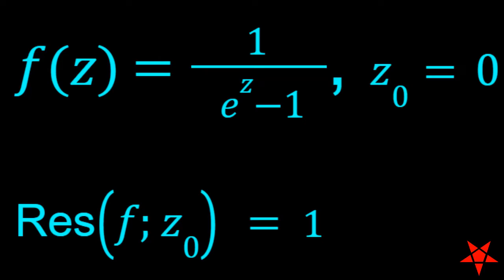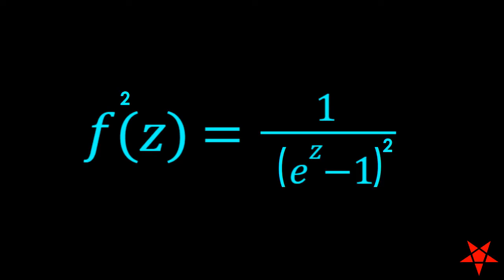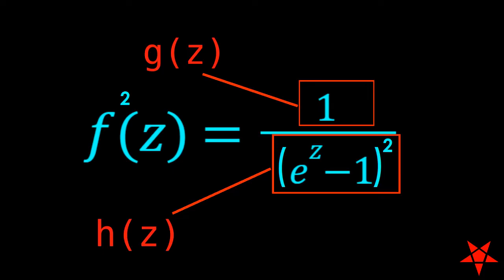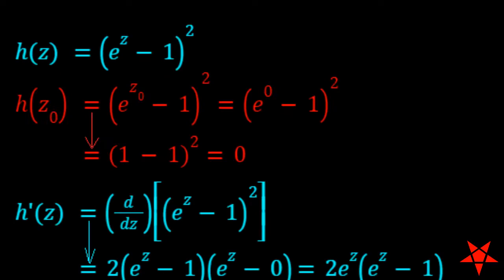So we'll move on to the square of f of z. We will begin by separating the square of f of z into two functions, g of z for the numerator and h of z for the denominator. We see that g of z is a constant equal to 1.